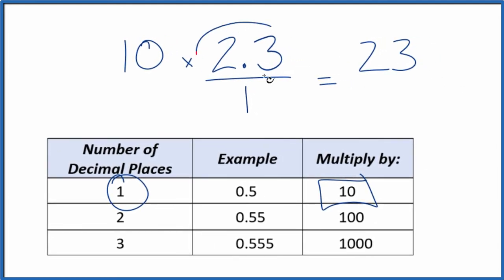But I can't just multiply the numerator by 10. I also need to multiply the denominator by 10. That's because 10 divided by 10 is 1. So I'm just multiplying this by 1. I don't change the value, just the way it's represented.